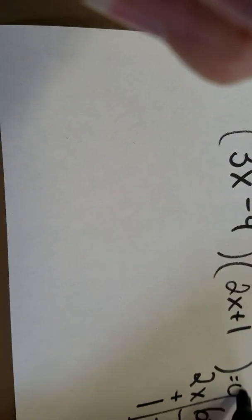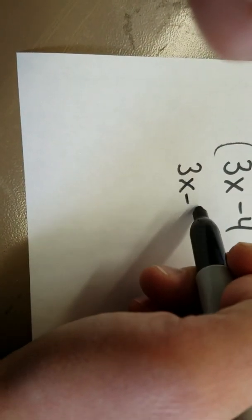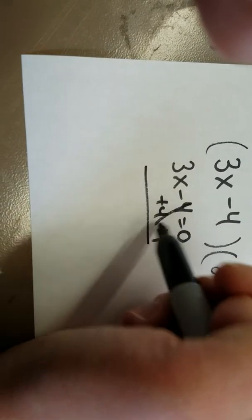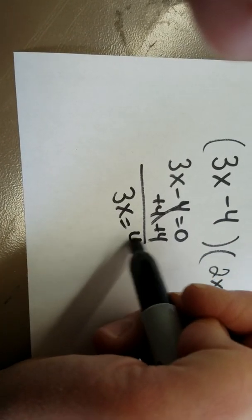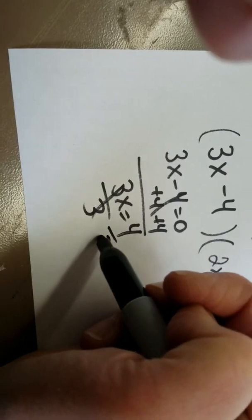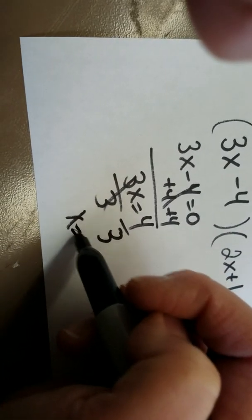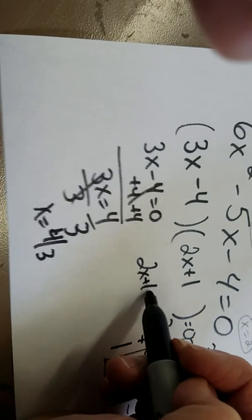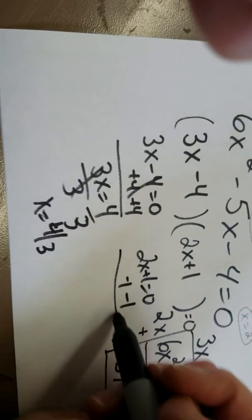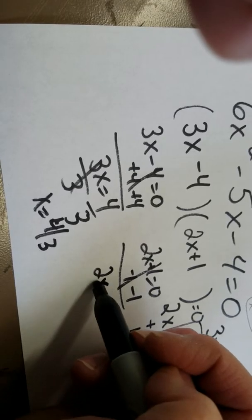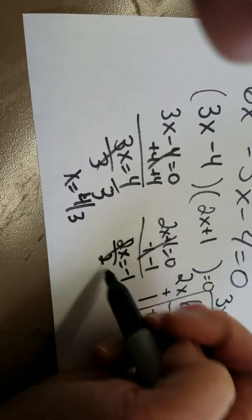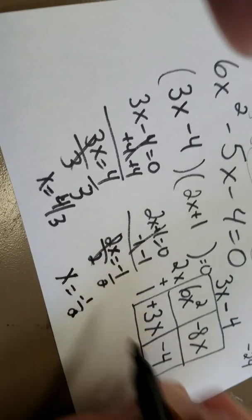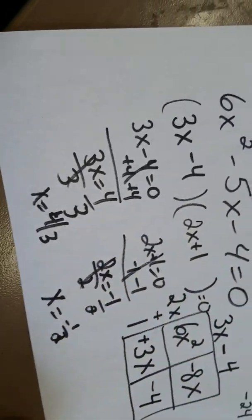So my factored equation becomes 2x plus 1 here. Now, if I go to solve this, I wind up with 3x minus 4 equals 0. So 3x equals 4. So that means x equals 4 thirds. And 2x plus 1 equals 0. So that means that 2x equals negative 1. So x equals negative 1 half. And those are your two factors.